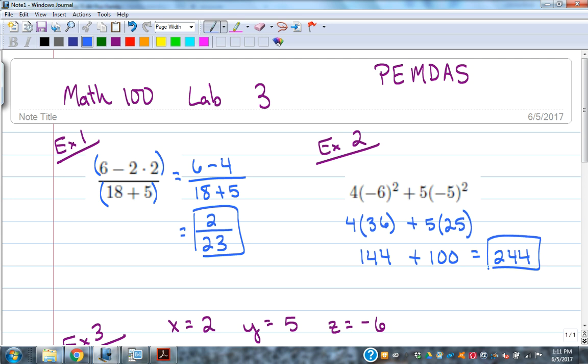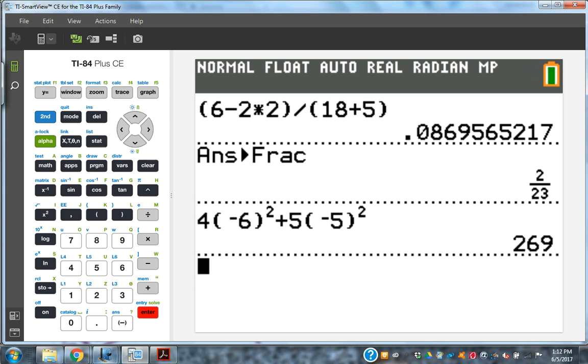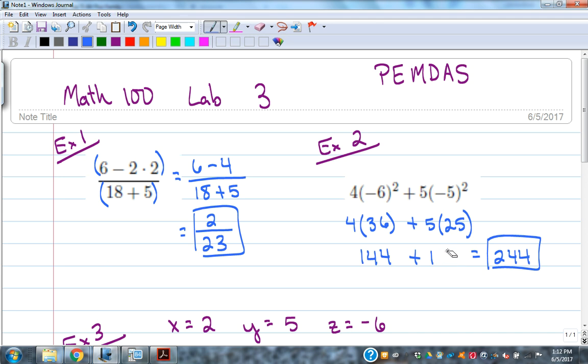The great thing about the graphing calculator is you could do all that at once just by typing in 4 parentheses negative, and the negative is down here below the 3, 6, close the parentheses. To get the squared, you can use this button over here to the left that gets you a squared. It's plus 5 parentheses negative 5. Another way to get an exponent - here we need a squared, but if you needed a cubed or to a fourth power or something like that, you could use the caret symbol, which is right underneath the Clear button. It puts it up in the exponent form. A good way to check yourself where you're working these out - it's actually 269.